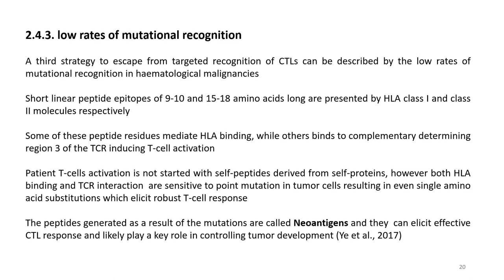The third mechanism is the low rate of mutational recognition. Short linear peptide epitopes of 9-10 and 15-18 amino acids are presented by HLA class 1 and class 2 molecules respectively. Some peptide residues mediate HLA binding while others bind to complementary determining region 3 of the TCR, inducing T cell activation. Both HLA binding and TCR interaction are sensitive to point mutations in tumor cells, resulting in even single amino acid substitutions that elicit robust T cell responses. The peptides generated by mutations are called neoantigens and can elicit effective CTL responses, likely playing a key role in controlling tumor development.